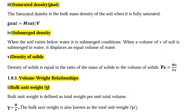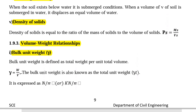Next we are going to see submerged density. When the soil exists below water it is in submerged conditions. When a volume V of soil is submerged in water it displaces an equal volume of water. Submerged density rho dash is equal to rho sat minus rho W. Density of solids is equal to the ratio of mass of solids to the volume of solids: rho S equal to Ms divided by Vs.